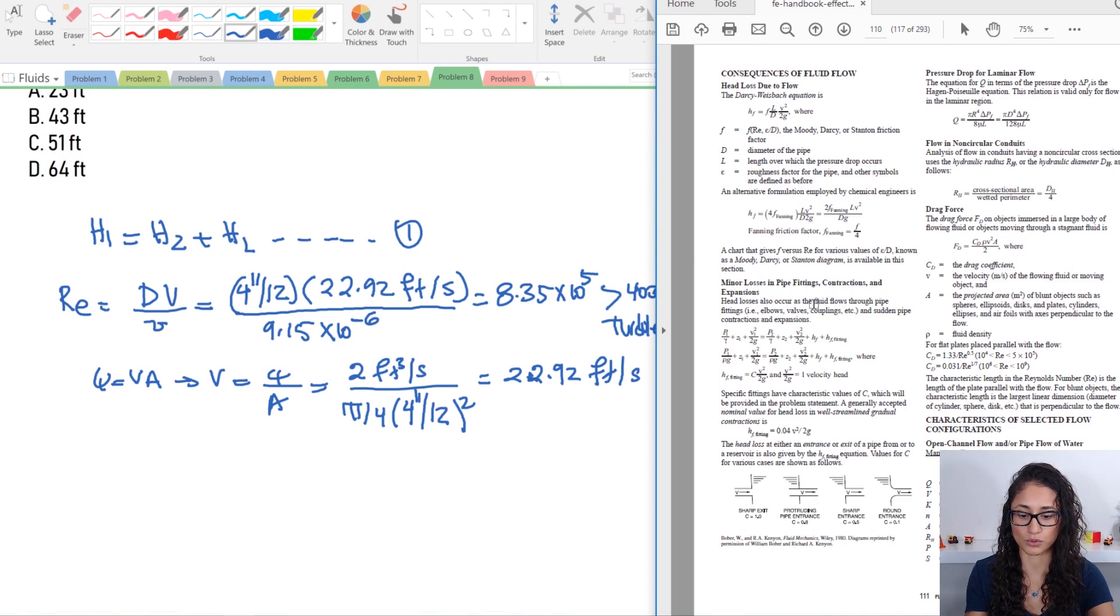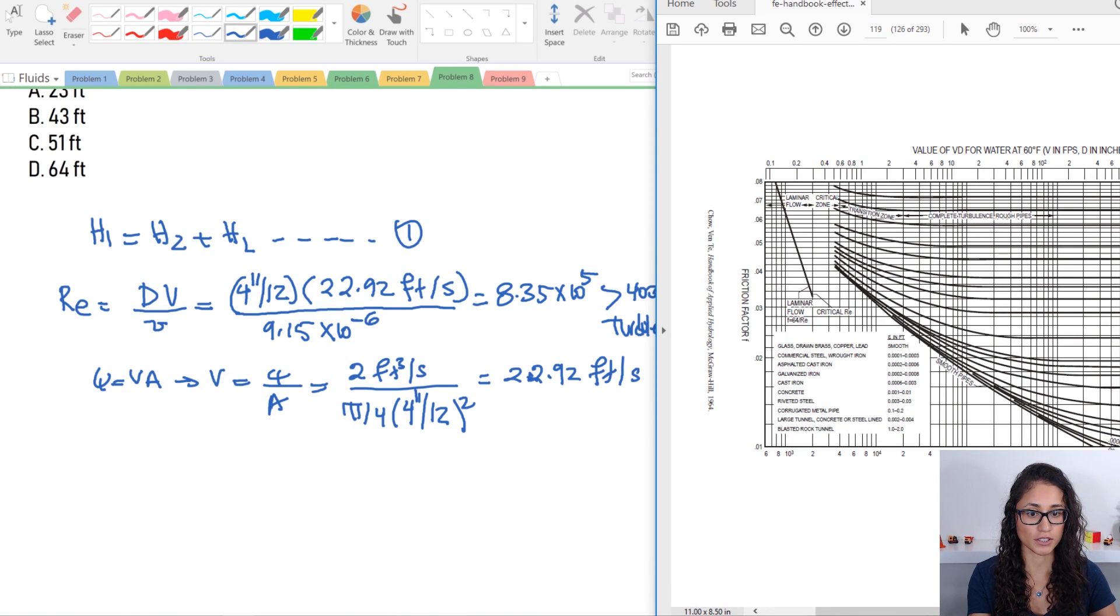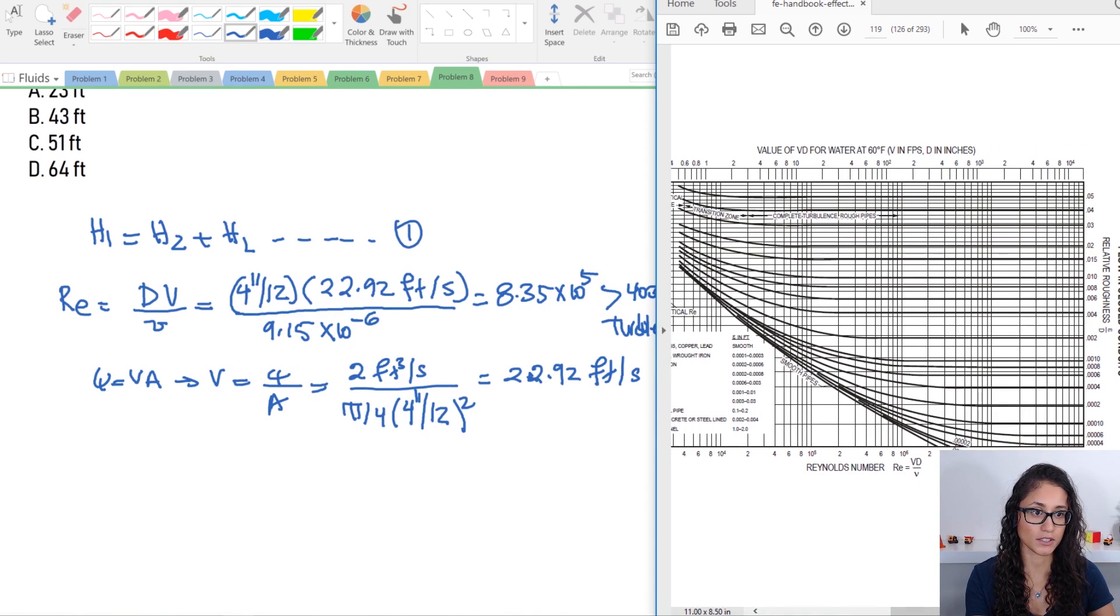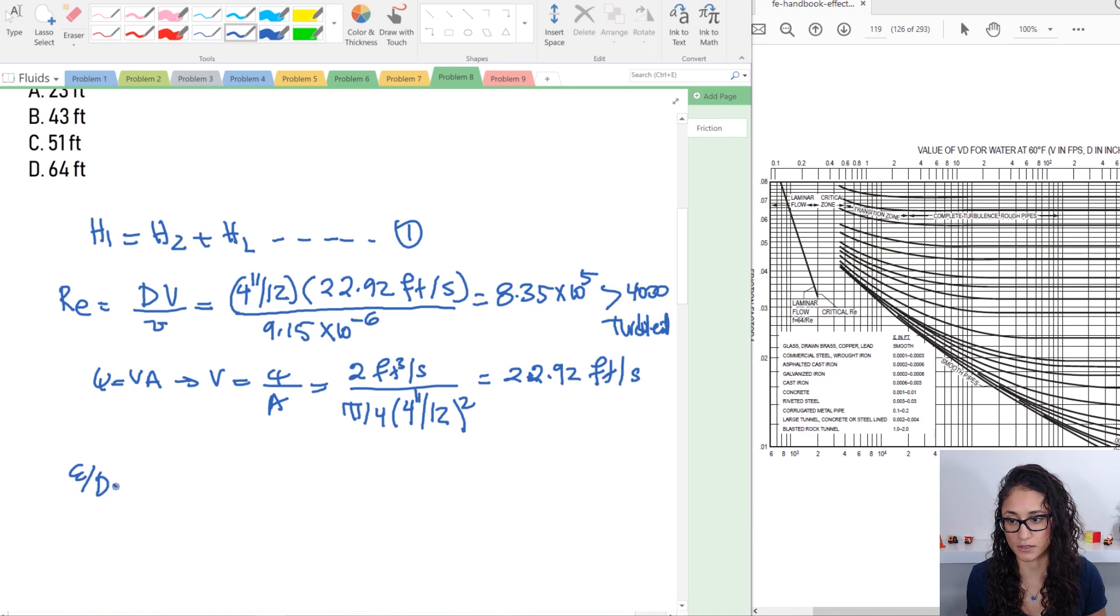Now let's go to the Moody chart. We calculated Reynolds number, and here we need to calculate epsilon over D so we can find the friction factor F. Epsilon is 0.0005 divided by 4 inches. Again, you have to convert to feet. So this is 0.0015.